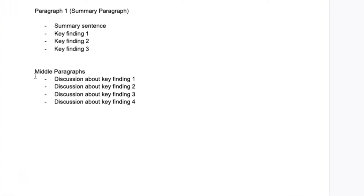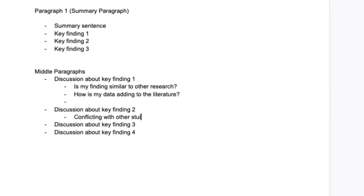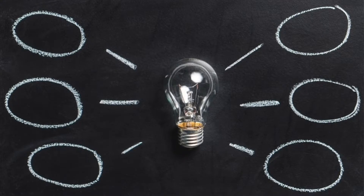The middle paragraphs are where you discuss your study findings — keep to only one key finding per paragraph. Compare your finding with what has been found in the research field. Is your key finding similar to other research? If so, how is your data adding to the literature? Is your finding conflicting with what others have found? If so, why? Do you have a hypothesis — perhaps you used a different method or had a smaller sample size?